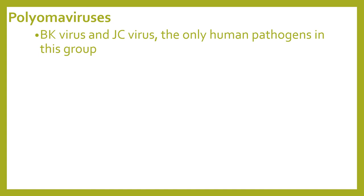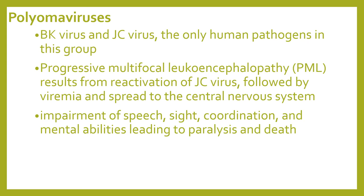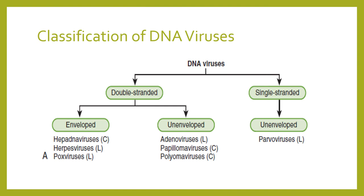The third group of double-stranded unenveloped DNA viruses is polyomavirus. The only human pathogens are BK virus and JC virus. JC virus causes progressive multifocal leukoencephalopathy (PML), which results from reactivation of JC virus followed by viremia and spread into the central nervous system. It manifests as impairment of speech, sight, coordination, and mental abilities, leading to paralysis and even death. On histology, the brain tissue shows abnormal oligodendrocytes.